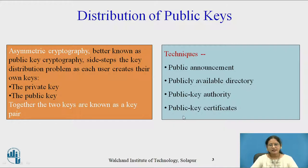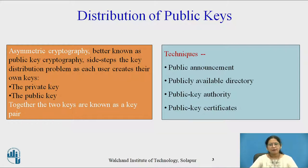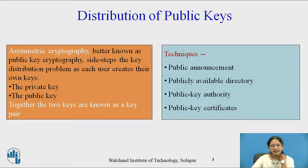Asymmetric cryptography, better known as public key cryptography, sidesteps the key distribution problem as each user creates their own keys — the private key and the public key. Together, the two keys are known as a key pair. There are different techniques for distribution of public keys: public announcement, publicly available directory, public key authority, and public key certificate.